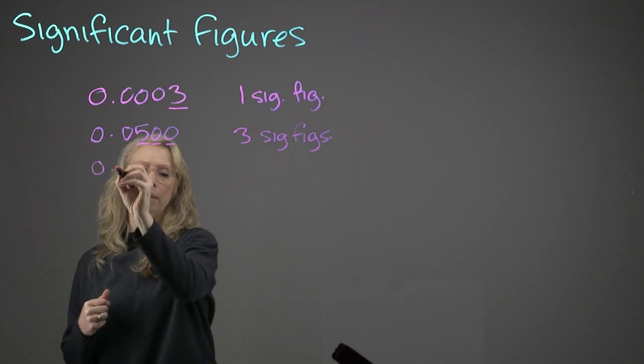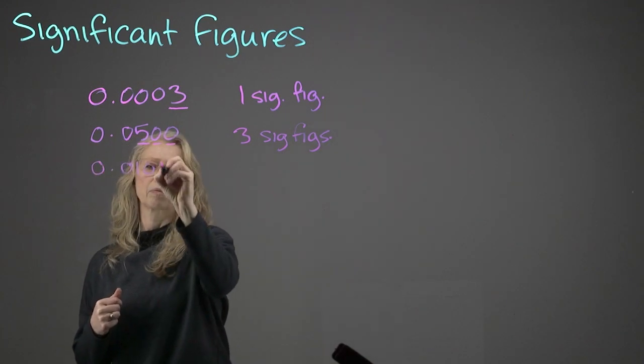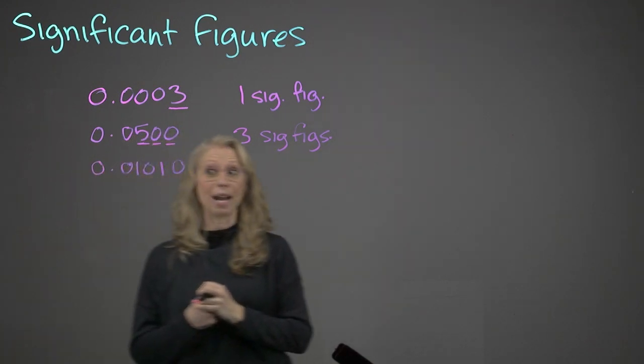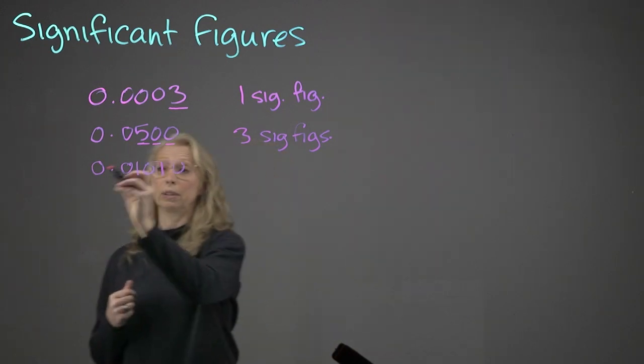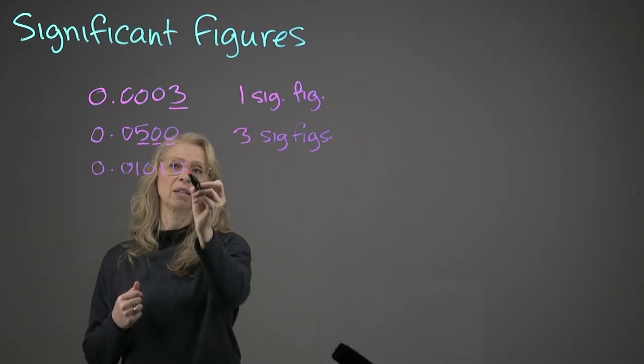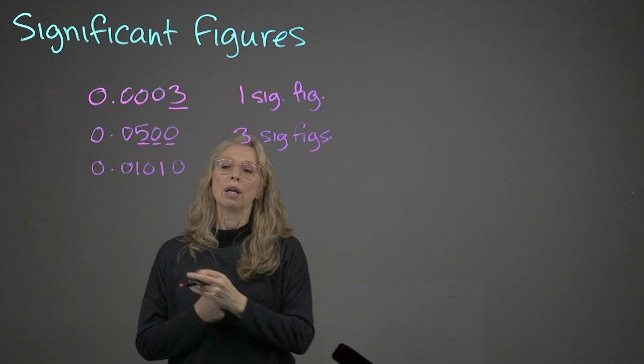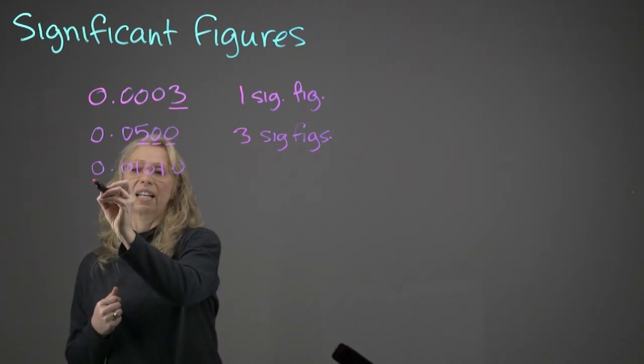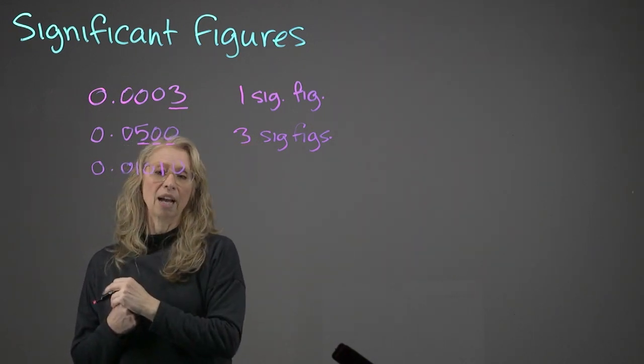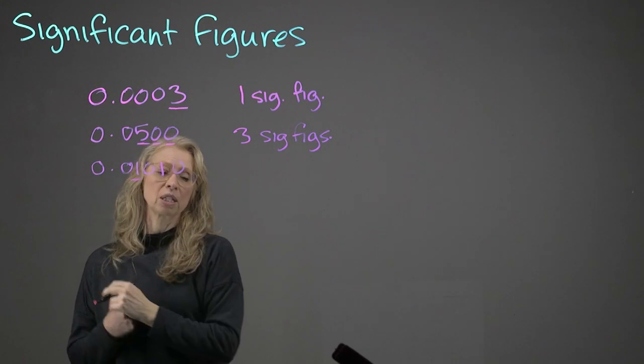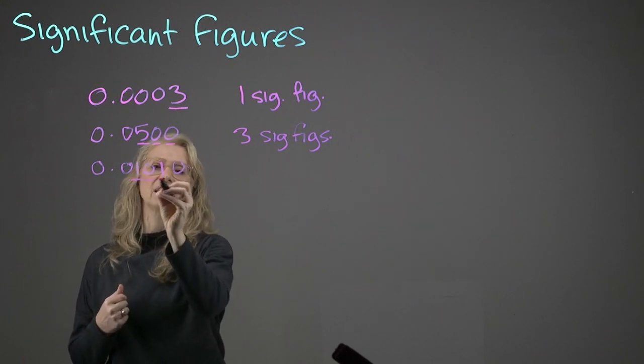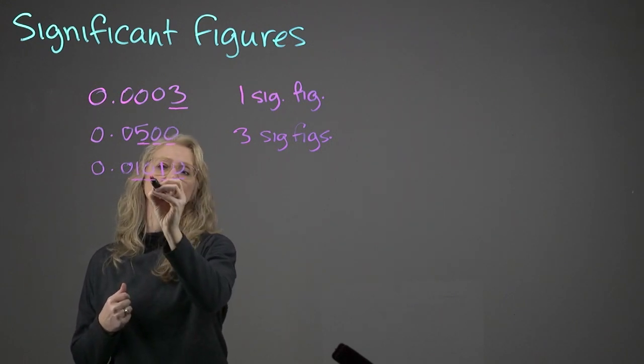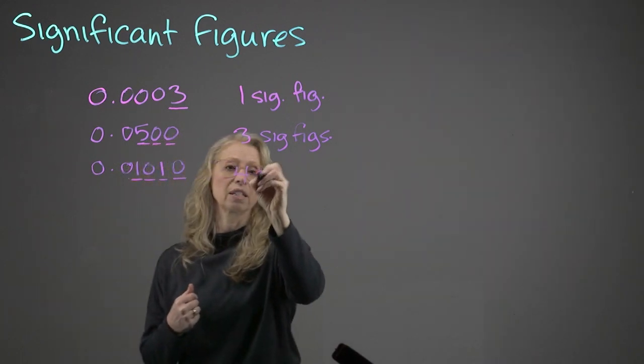What about this one? Okay, so now we have a number of zeros. We have leading zeros, we have zeros in the middle, and we have trailing zeros. The rule of thumb is, again, the leading zeros do not count. We get to our first non-zero number, and every digit after that, including the zeros, count. So this one has four sig figs.